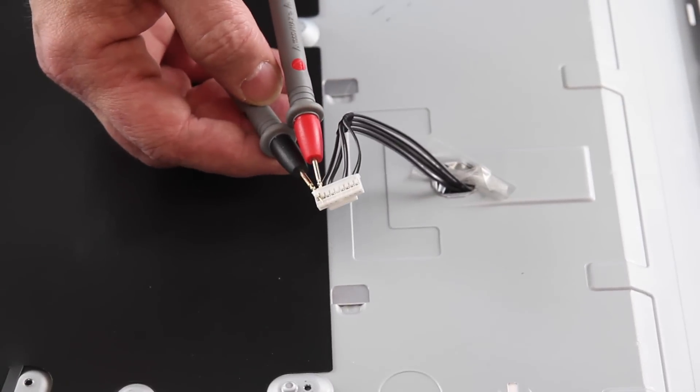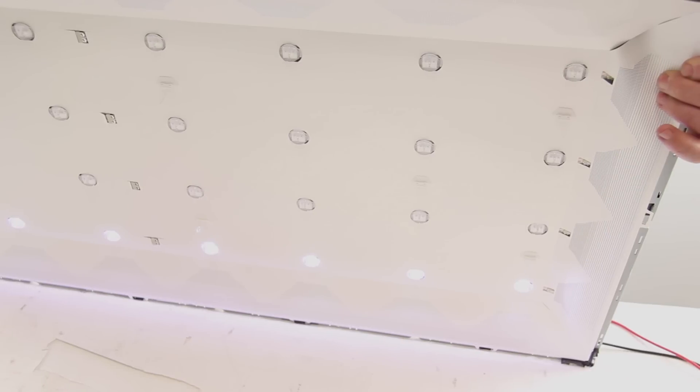Next, I can check to see if any of the LEDs are turning on. If you have removed the TV panel, you can look on the screen side of the TV to see if anything is illuminated.